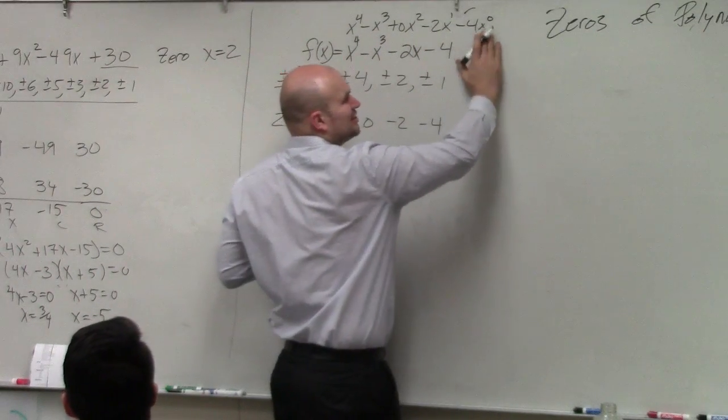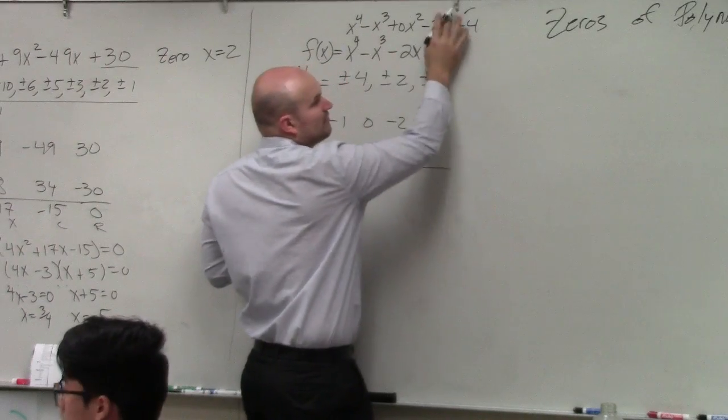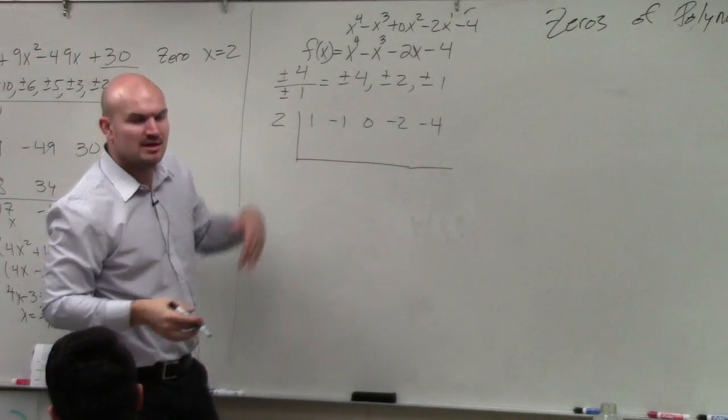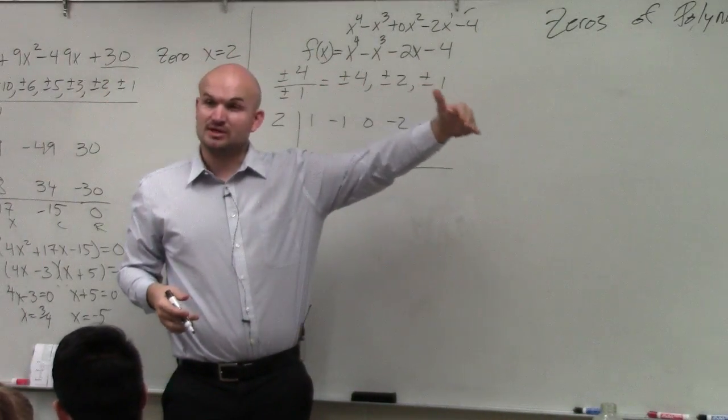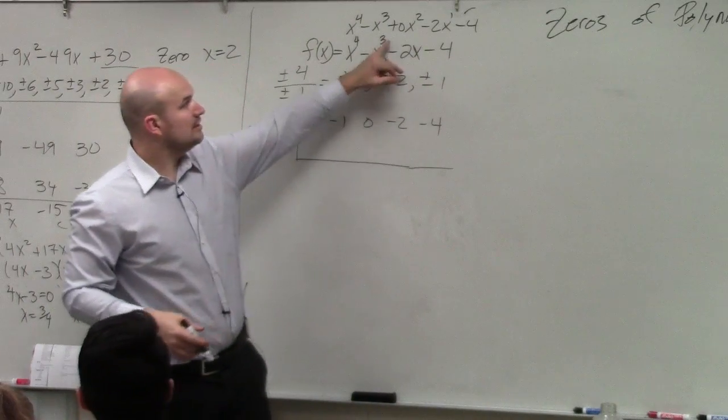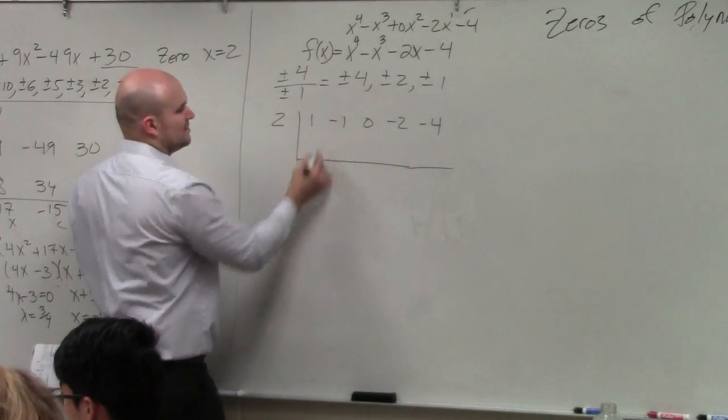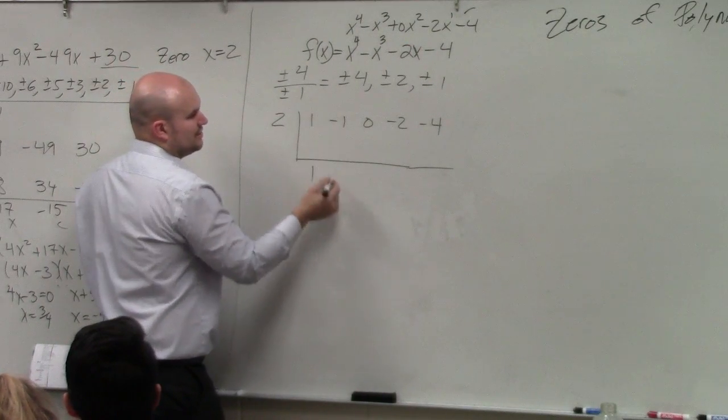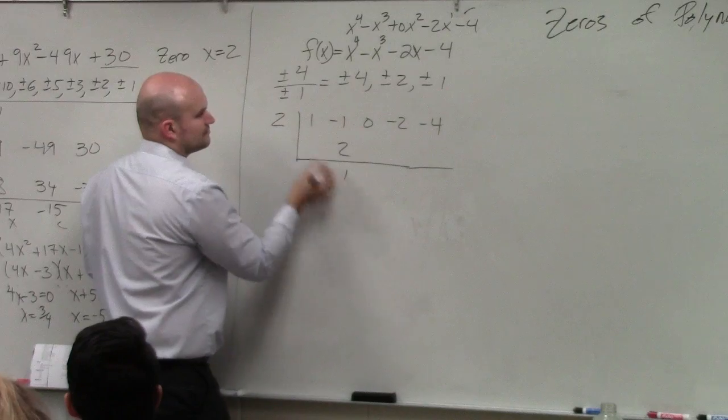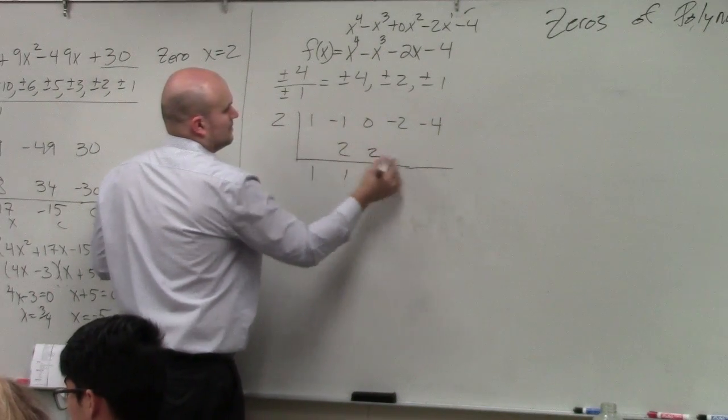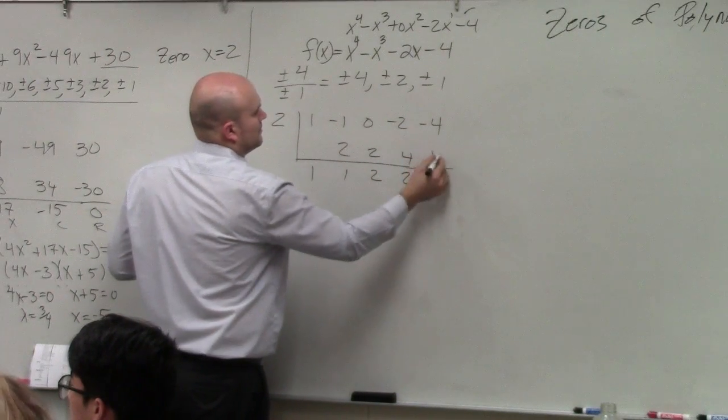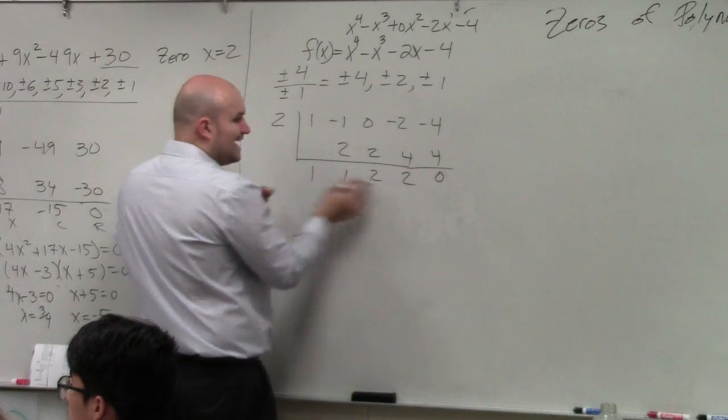But we don't write x to the 0, because that's just 1. And we don't really write x to the 1, because that's just x. But just make sure you have every single one covered. And if you don't, use 0 as that place value. Does that make sense? Okay. Now we just do our synthetic division. 1 is 2. So I get this.